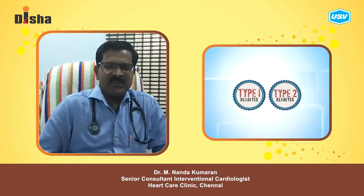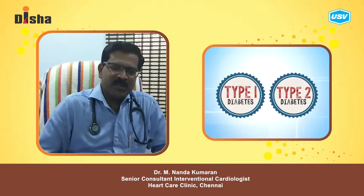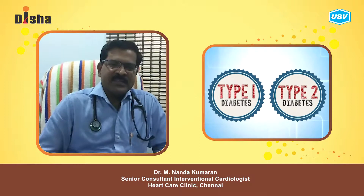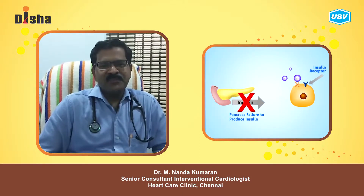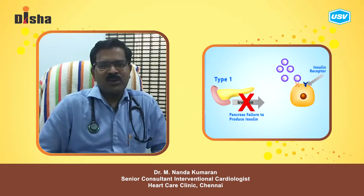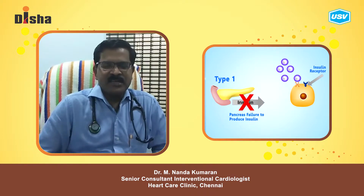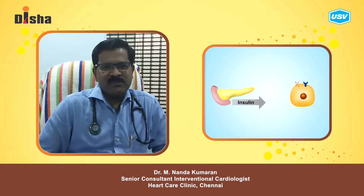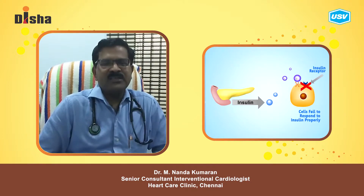Diabetes can be of two types: Type 1 diabetes and Type 2 diabetes. Type 1 usually occurs in children and is due to lack of insulin secretion from the pancreas. Type 2 diabetes usually occurs in middle age and elderly.